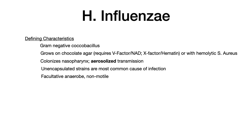The first high-yield point is that H. influenzae grows on chocolate agar because chocolate agar contains those hemolytic factors. But you should also know that if you can't grow it on chocolate agar, you can grow it in the presence of Staph aureus, because Staph aureus will produce those hemolytic factors itself. That does show up on exams, so please know that.